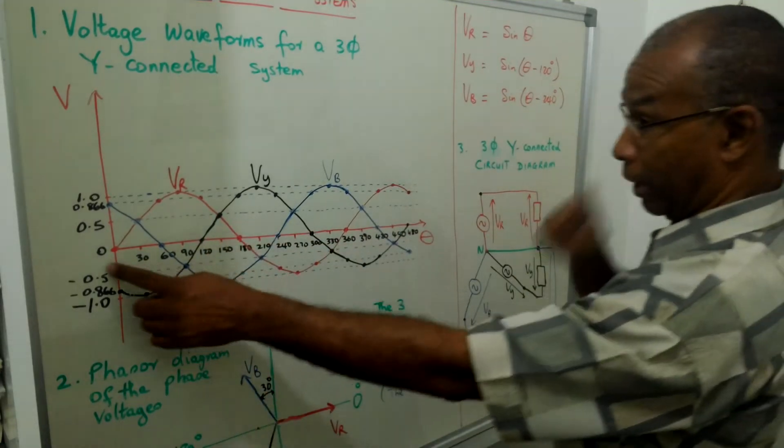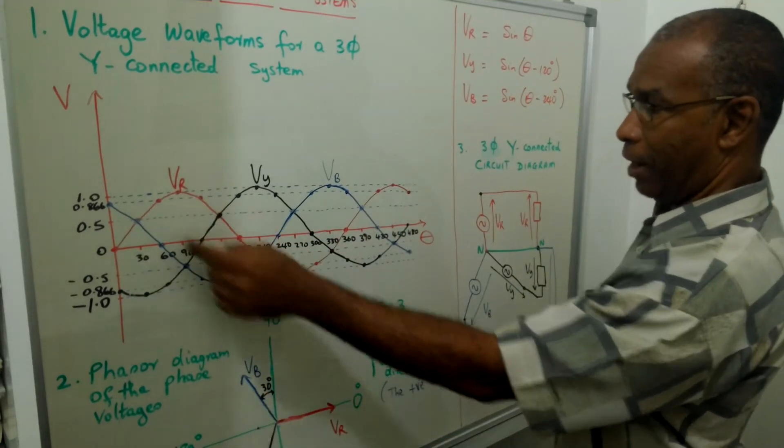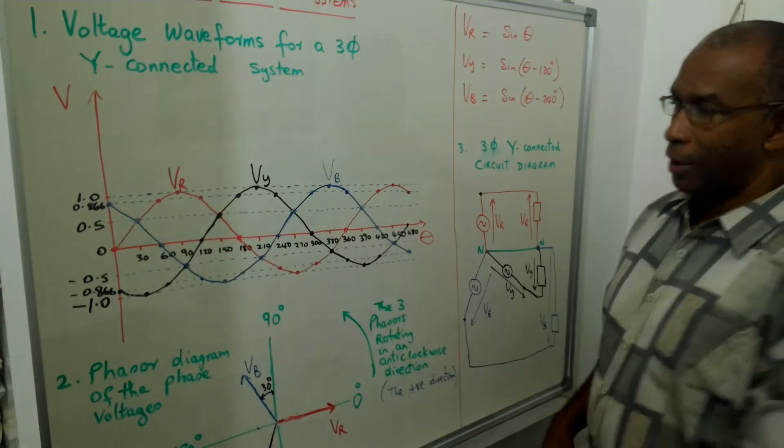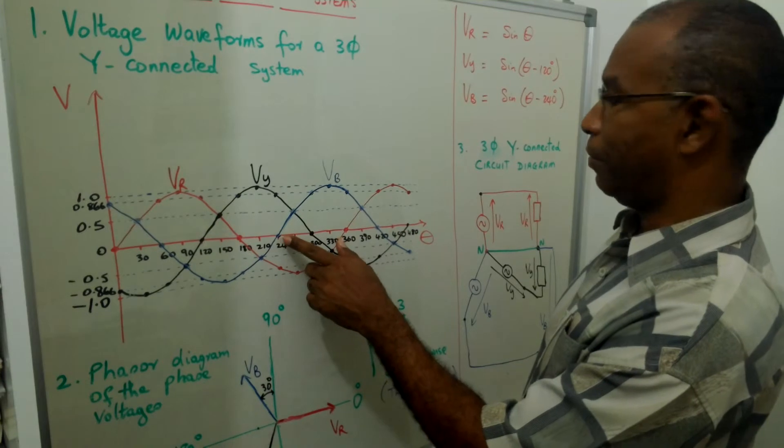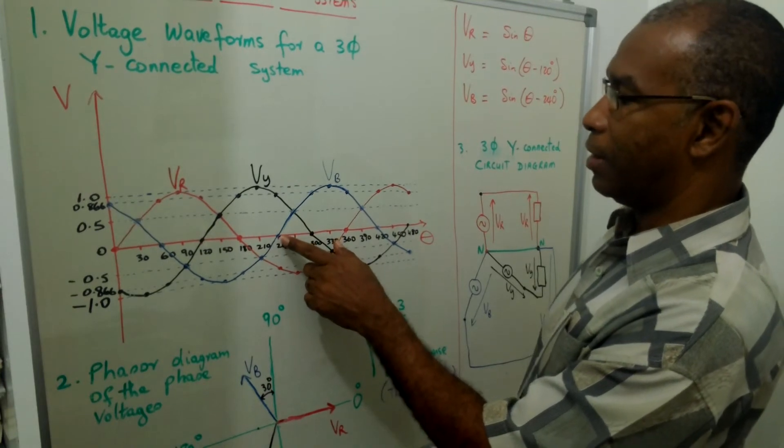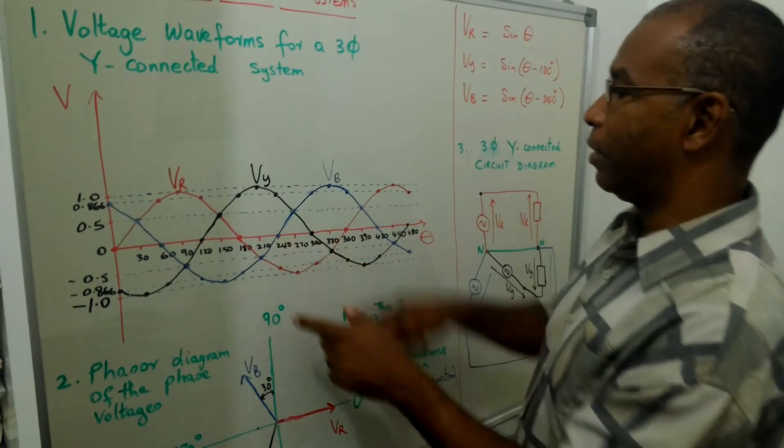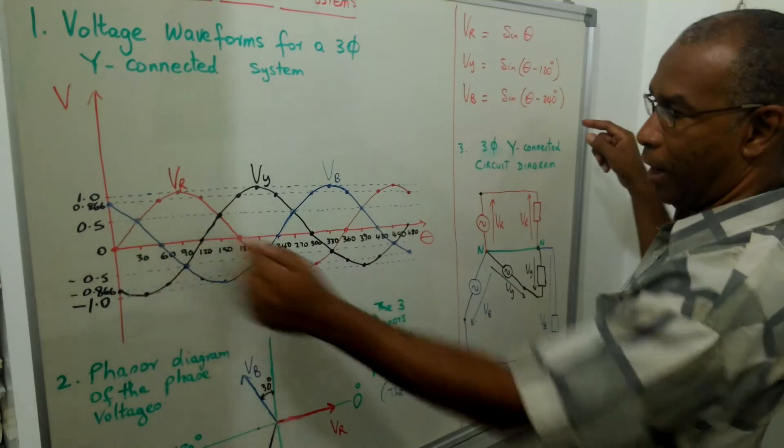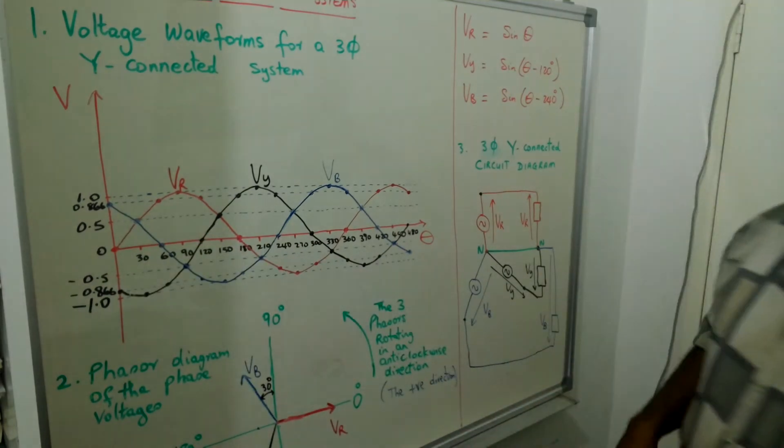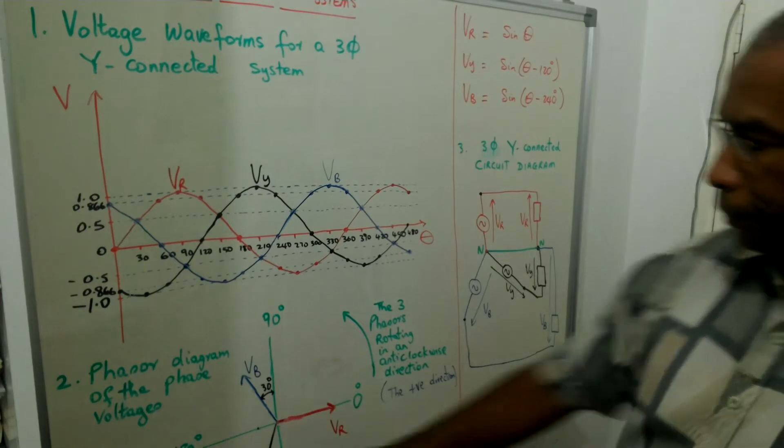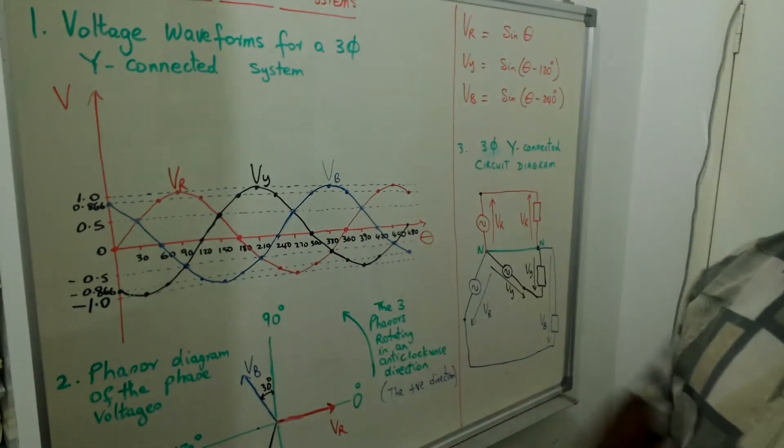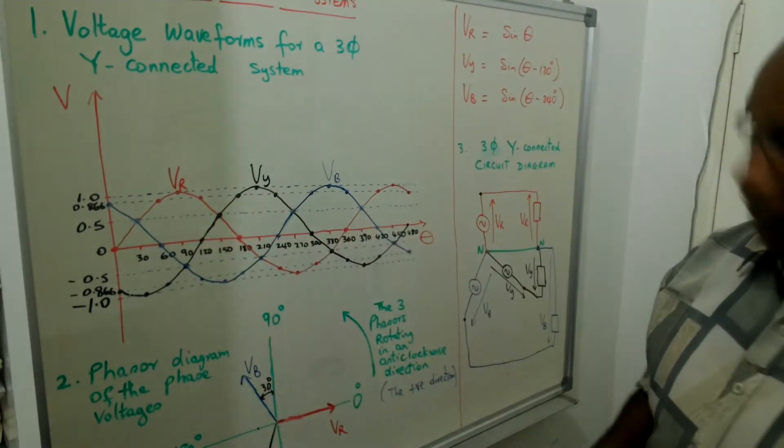So it is actually lagging behind VR by 120 degrees. Notice that the blue waveform VB crosses the X axis at 240 degrees. So it is lagging VR by 240 degrees. So this is one way of representing the voltage waveform. Now there are sine waves and this shows you the sequence.